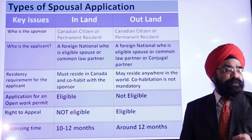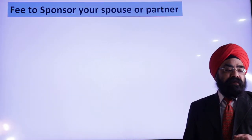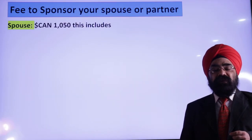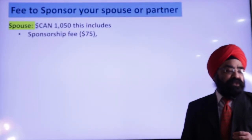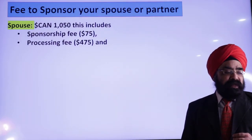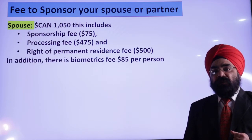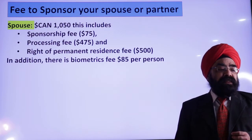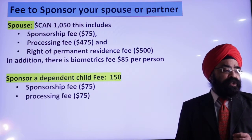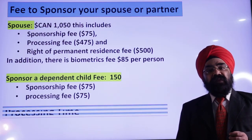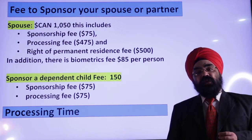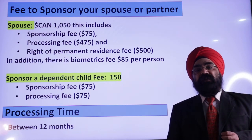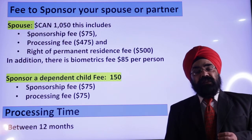What is the government fee? The government fee to sponsor a spouse is $1,050, which includes the sponsorship fee, processing fee, and right of permanent residence fee. In addition, if you have to undergo biometrics, it is an $85 fee. If you are also bringing a dependent child, you have to pay $150, which includes the sponsorship fee as well as the processing fee. Processing time is around 12 months, and the government is trying to expedite this as much as possible.